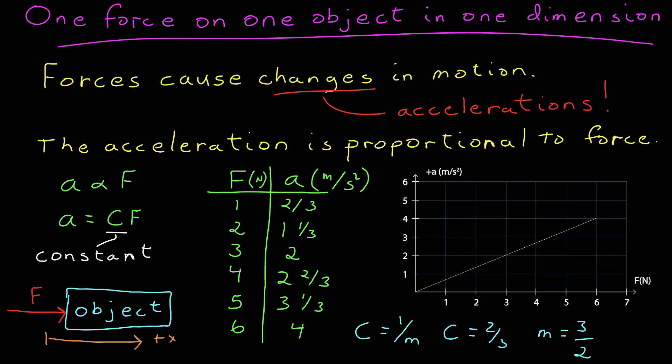The slope of that line is going to tell us what the mass is. What Newton's second law tells us is that this constant of proportionality, c, that I've shown here, is one over the mass of the object. So, in this case, where c is the slope of this line, which is 2/3, that tells us that the mass of the object is 3/2 kilograms.